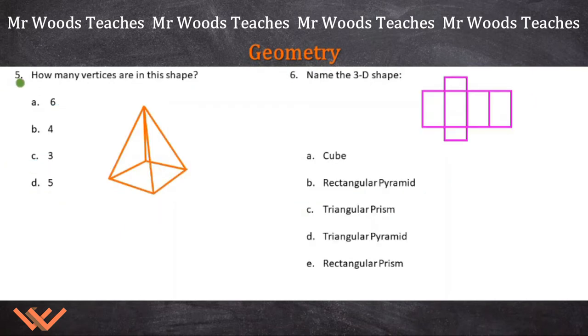Continuing with geometry. How many vertices are in this shape? A vertex is where two or more lines intersect. So there's one, two, three, four, five. There we go. I just counted them up.